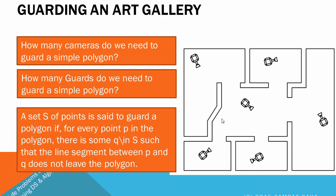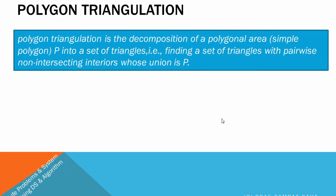The first key concept for solving this art gallery problem is polygon triangulation. Any simple polygon can be triangulated. If the polygon has n vertices, the triangulation will have exactly n minus 2 triangles. Remember, this is a simple, non-intersecting polygon. When you triangulate it into multiple triangles and rejoin them, they form the original polygon P again. For intersecting polygons, it's more complex.